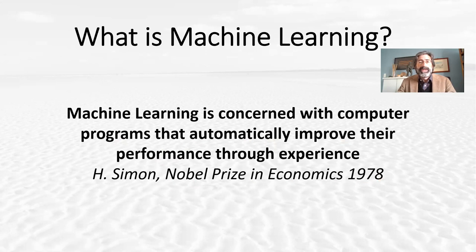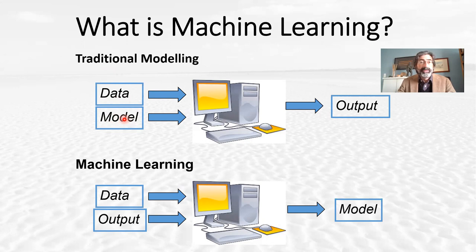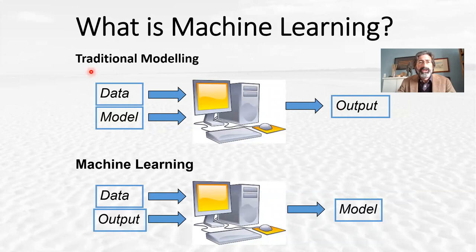Certainly machine learning is growing as a field — it's growing a lot also in the coastal area, but probably not so much as I was anticipating. Traditional modeling is based on inputting into a computer data and a model, usually a process-based model where we describe all the processes through mathematical equations to represent physical processes. Data and model go inside the computer and we get an output, our prediction.